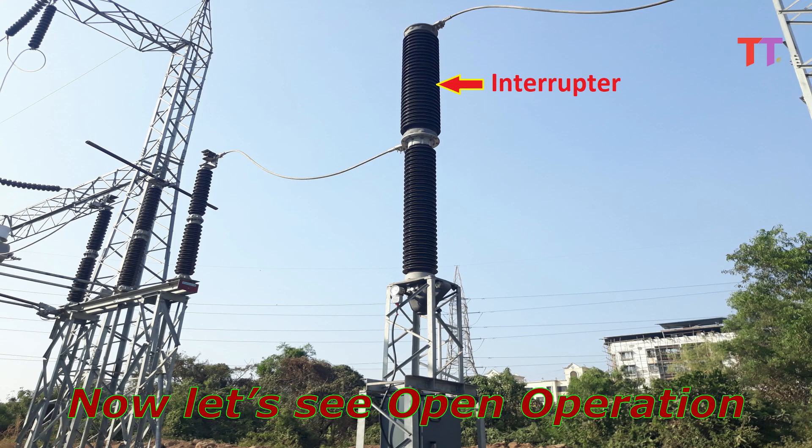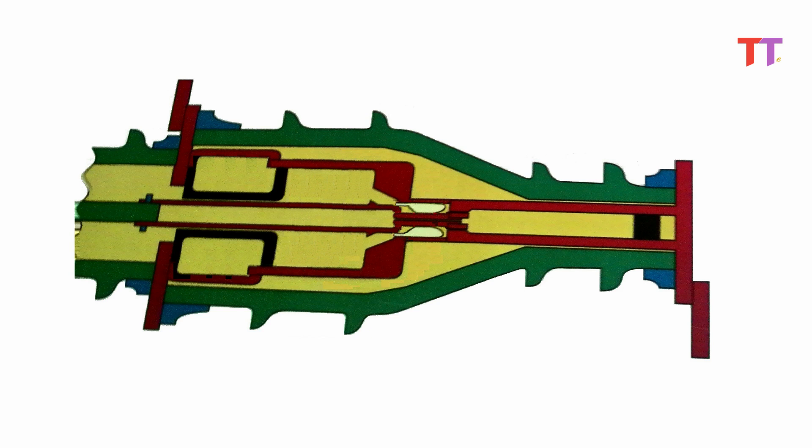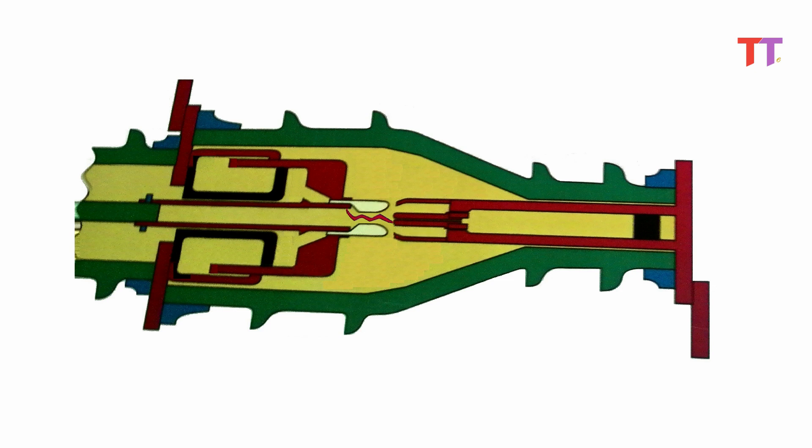Now let's see open operation. This is closed condition. Once trip or open command is given to circuit breaker, moving contacts move away from fixed contact.